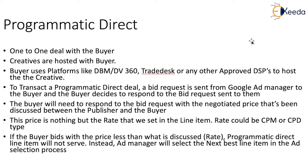If the buyer bids with a price less than what was discussed, the programmatic direct line item will not serve. Instead, Ad Manager will select the next best line item in the ad selection process. This means that the buyer has to bid with the price that is negotiated between them — the rate that is set in the line item in Google Ad Manager. The buyer will be aware of this rate and must bid at that price. If they bid more than the negotiated price, they will still be charged the same negotiated price. However, if they bid less, the programmatic direct line item will not serve and the next best eligible line item in the ad selection process would serve.